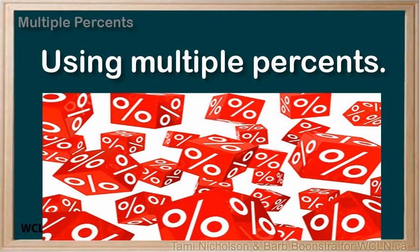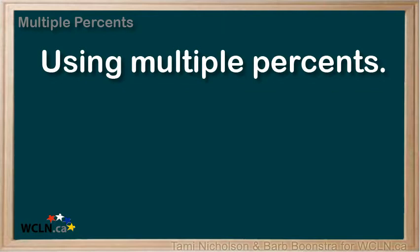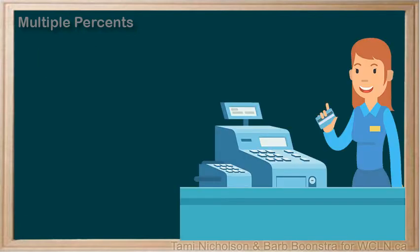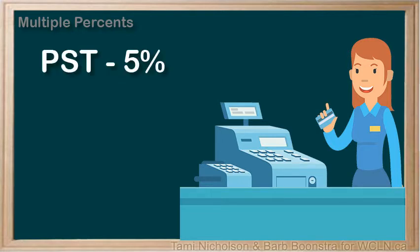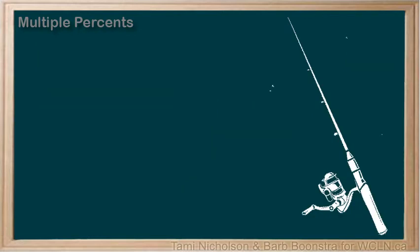You will find many occasions in real life where more than one percent is applied to a number. There are, however, several ways multiple percents can be applied. The most common example is with taxes when you buy an item. BC has a 5% provincial tax called PST and a 7% goods and services tax called GST that is applied to many purchases. Let's say you are purchasing a fishing rod that is listed at $120.